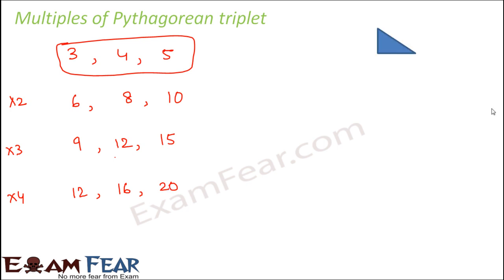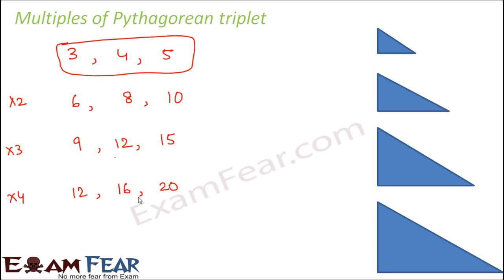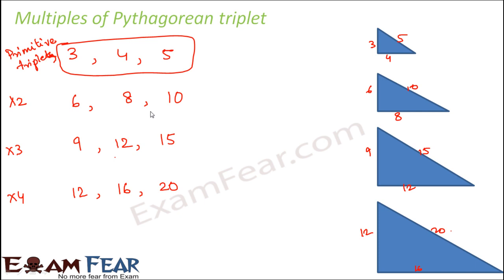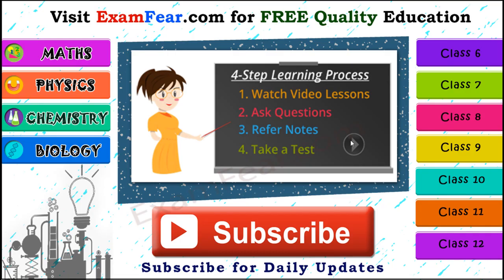Any multiple of a Pythagorean triplet is also a Pythagorean triplet. It's as if all these sets of numbers form right triangles — just with increasing side lengths: 3, 4, 5; then 6, 8, 10; then 9, 12, 15; then 12, 16, 20. All satisfy Pythagoras' theorem. The basic triplet — in this case 3, 4, 5 — is called the primitive triplet, and all its multiples also form Pythagorean triplets.